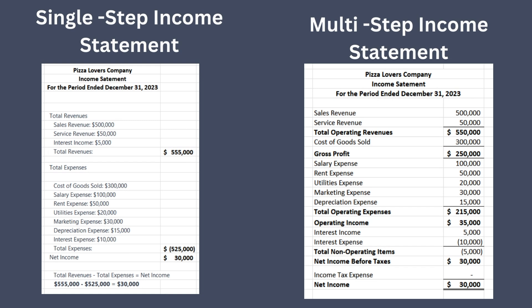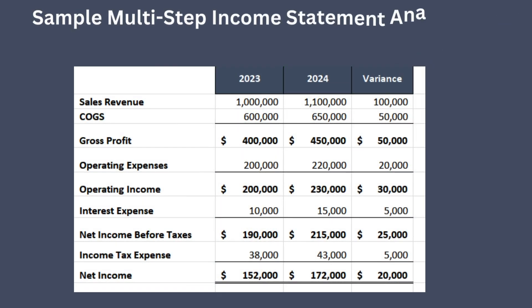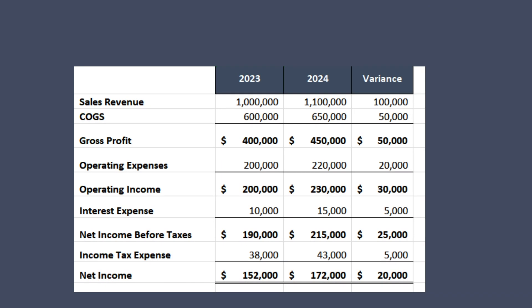This level of detail becomes particularly useful when comparing business performance over time. Preparing a multi-step income statement for comparative periods allows analysts to identify trends, measure performance over time, and detect operational efficiencies or inefficiencies. For example, an increase in gross profit margin over time may indicate improved production efficiency or pricing strategies. Let's take a look at this example — a multi-step income statement analysis for two periods. Sales revenue increased by $100,000, potentially due to increased sales volume or pricing changes.